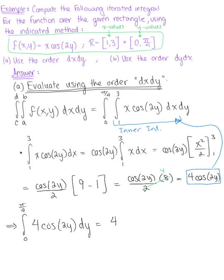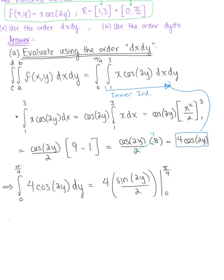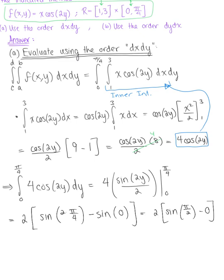This becomes 4 multiplied by sine(2y)/2, and we're ready to evaluate from 0 to π/4. This equals 2 multiplied by sine(2 times π/4) minus sine(0). So you have 2 multiplied by sine(π/2). We know sine(0) is 0 and sine(π/2) is 1, leaving us with a beautiful final answer of 2.